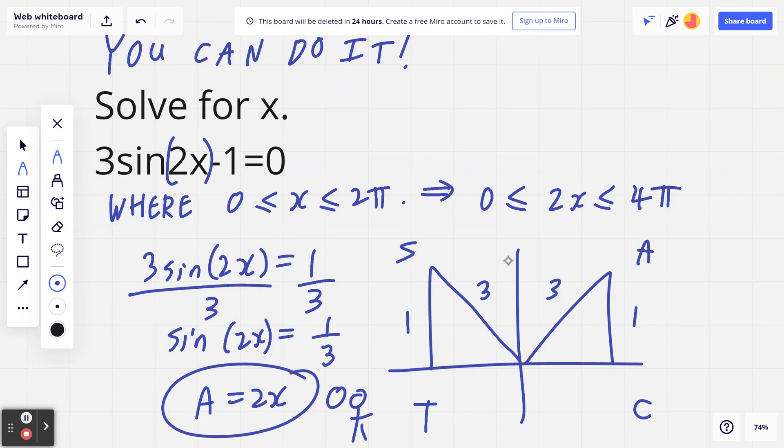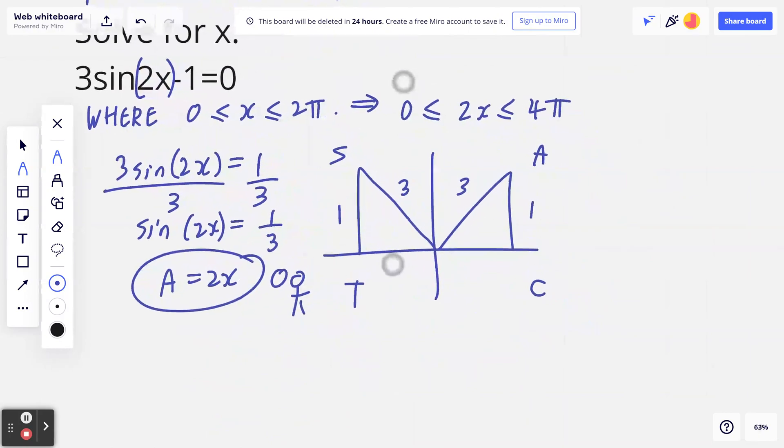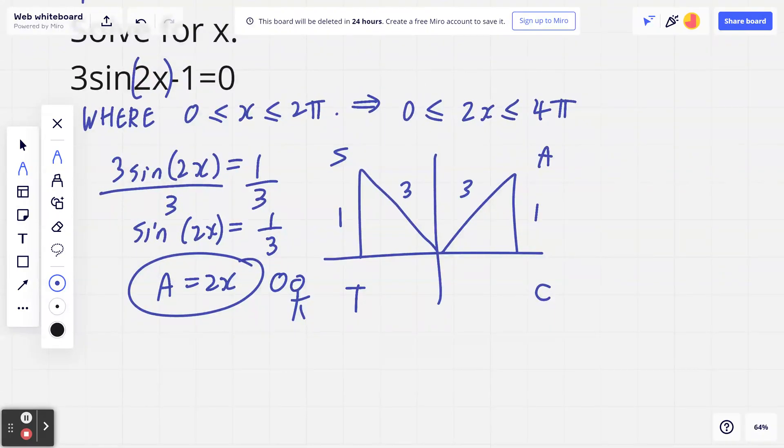Now you can grab the calculator. You can make sure you're in radian mode and you can take the inverse sine of 1 over 3. When you do that, one of the answers is going to be 0.339836909.